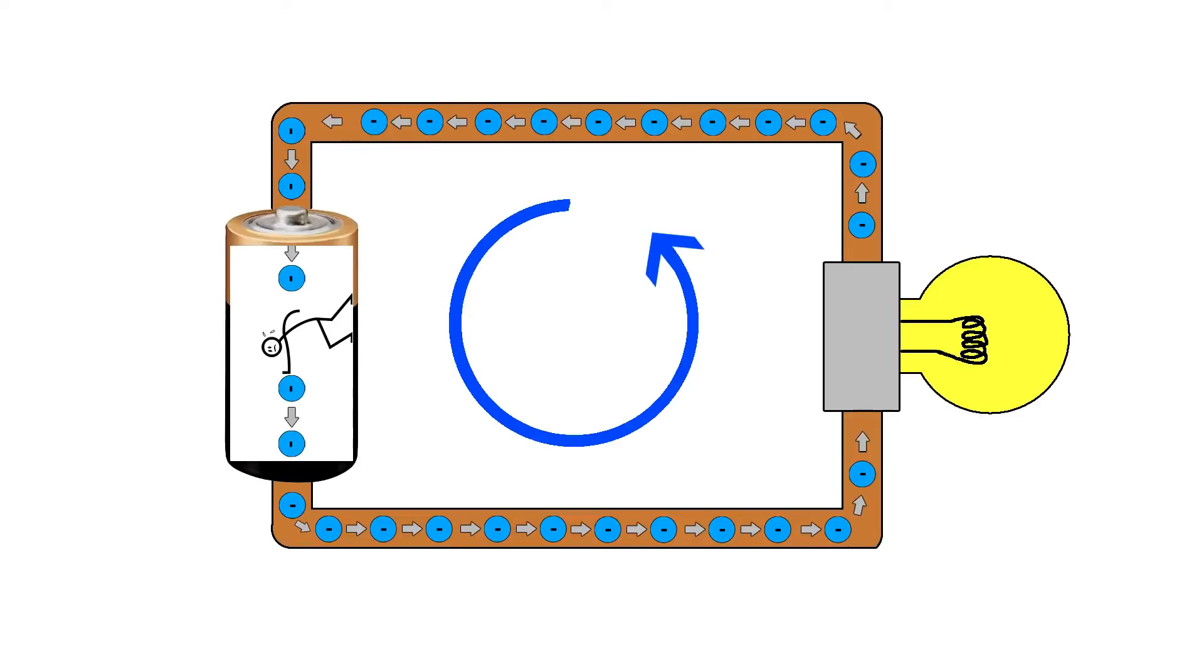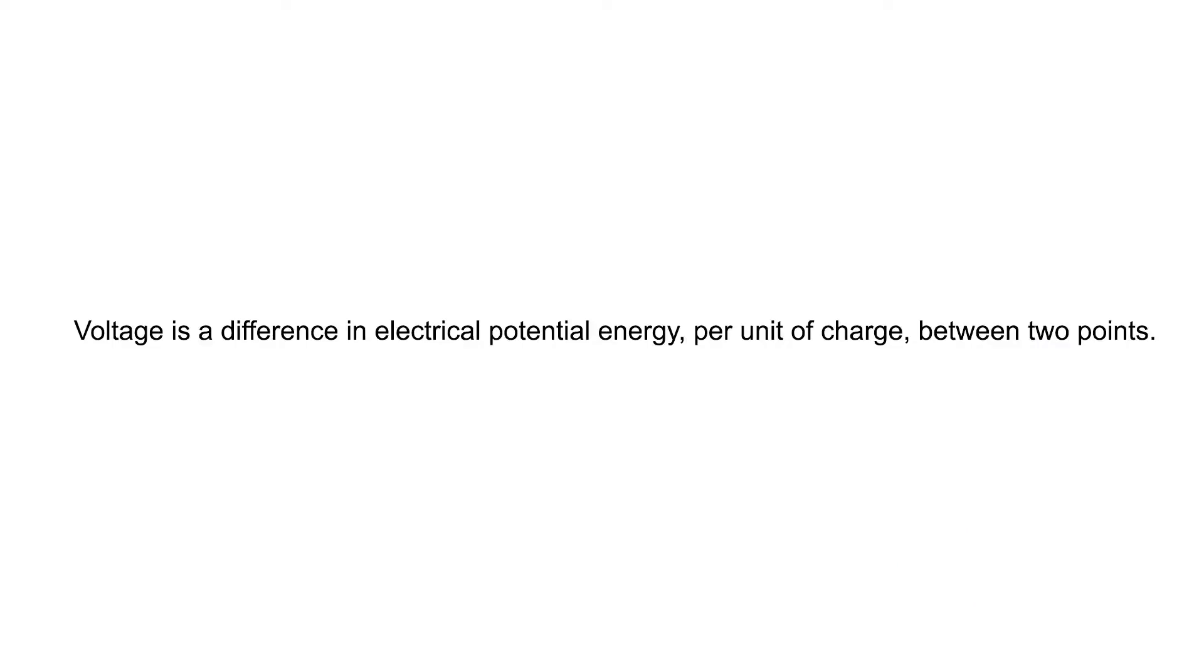I've been talking about what voltage does and how you can use it. Now let's talk about what voltage actually is. Voltage is a difference in electrical potential energy per unit of charge between two points. There's a lot to cover here, so let's break all these words down into their basic definitions.